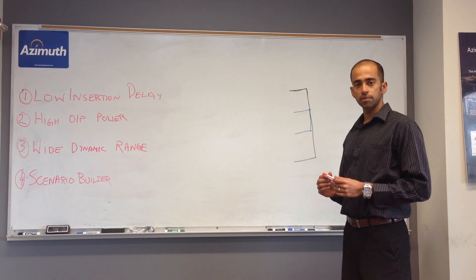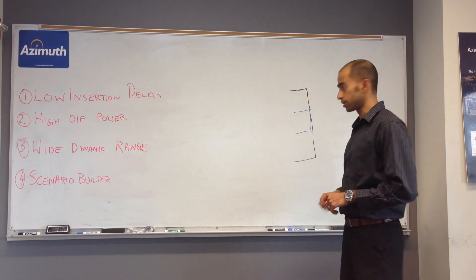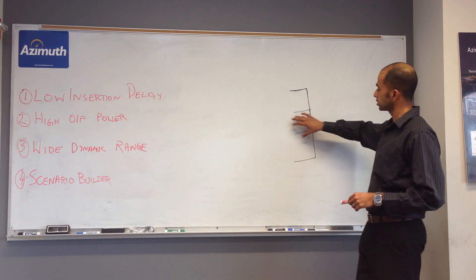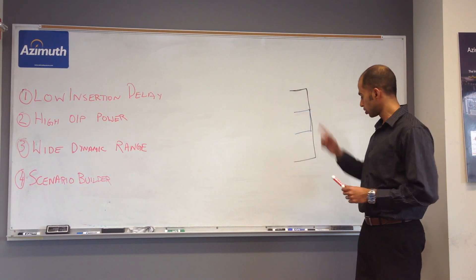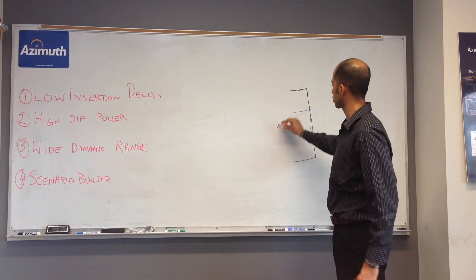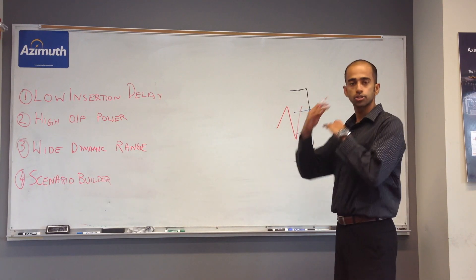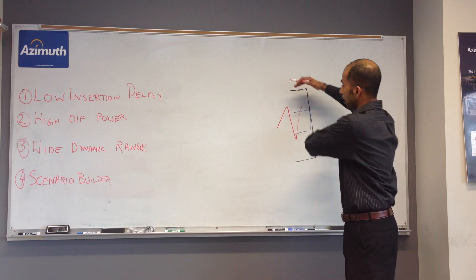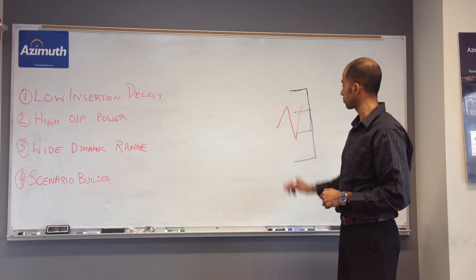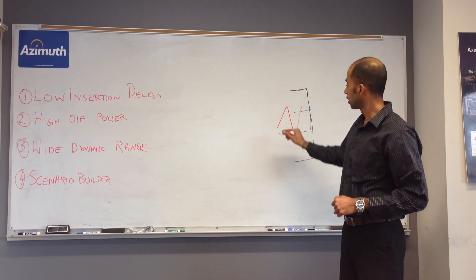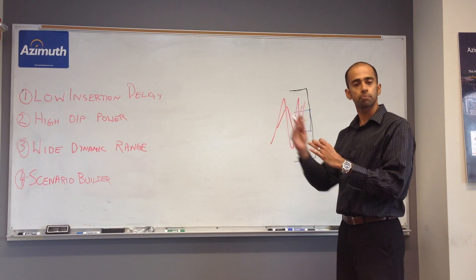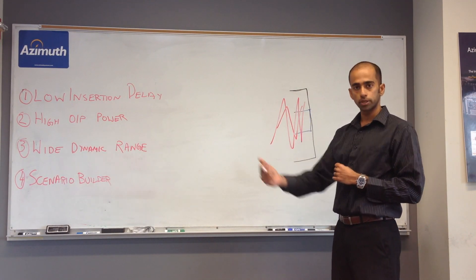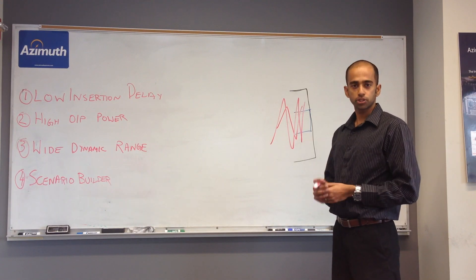The third thing to keep in mind is the dynamic range. Let's look at an example here. The first instance is where you have a piece of equipment with a narrow dynamic range. What happens here is any signal that goes outside this dynamic range is going to start clipping or causing overdrives. When you have another piece of equipment with a wider dynamic range, which basically means that even if you have large swings in power, it's able to handle these swings in power without any clipping or overdriving.